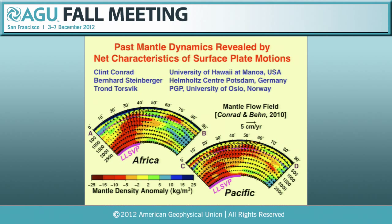We know that plate tectonics is a time-dependent system ultimately driven by convection in the Earth's mantle. We are starting to get images of what convection patterns in the mantle look like for the present day. The advent of seismic tomography has allowed us to use tomographic images as a starting point for generating mantle flow fields, because you can infer mantle density heterogeneity from tomographic images to drive a flow field.